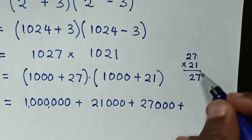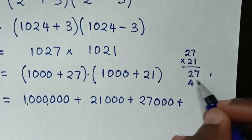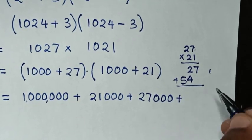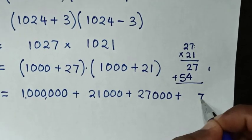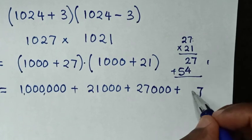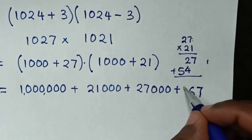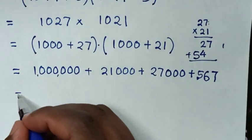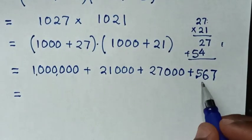To multiply 27 times 21: 1 times 7 is 7, 1 times 2 is 2, 2 times 7 is 14 carry 1, 2 times 2 is 4 plus 1 is 5. The sum is 567.